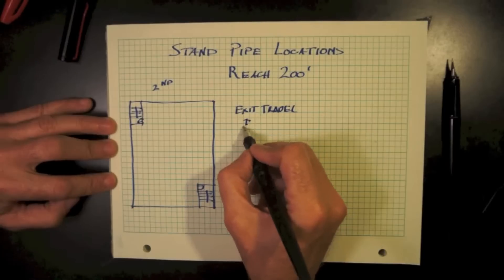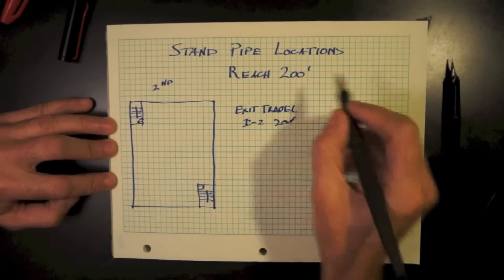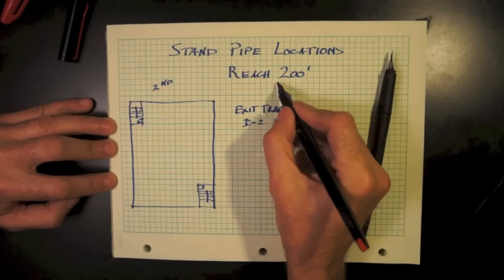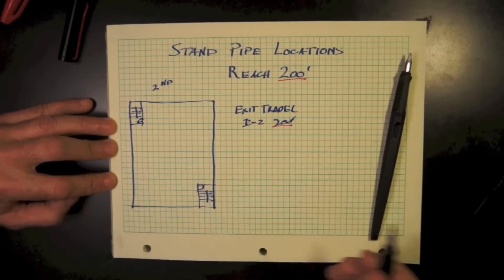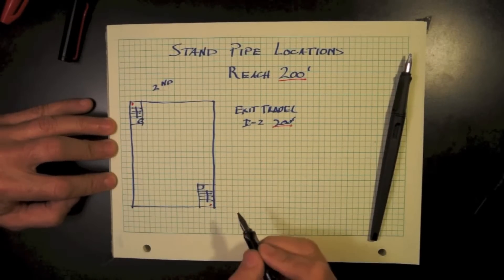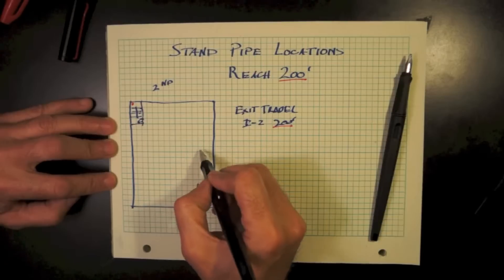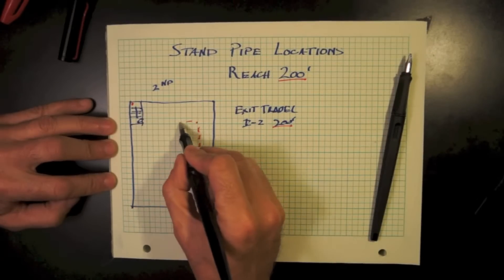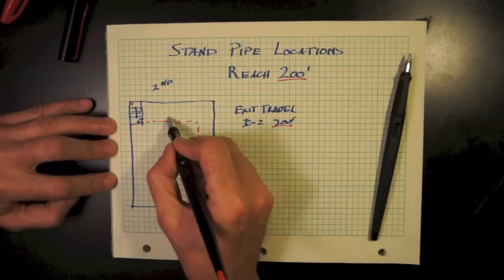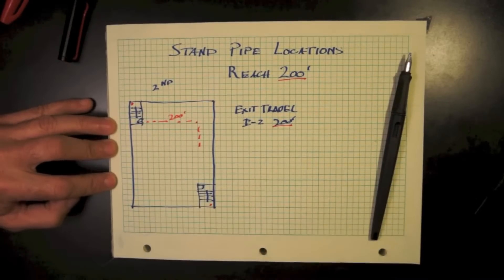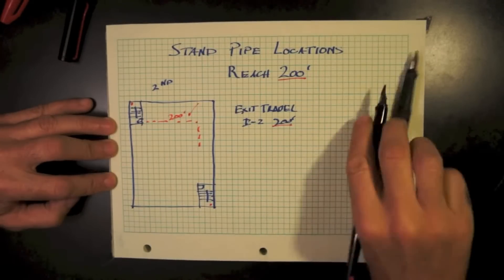Exit travel distance out of I-2 is 200 feet. Every exit stair shall have a standpipe located within it, and most jurisdictions would like that standpipe located at its intermediate landing. This makes it fairly simple. Our travel distance and our access to a standpipe are both 200 feet.